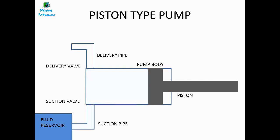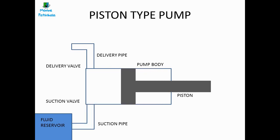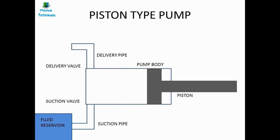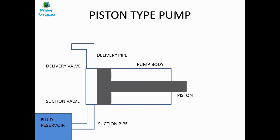When the piston moves forward, the suction valve closes and the piston pressurizes the fluid inside the pump, the delivery valve opens, and the fluid is discharged. This happens continuously and fluid is transferred from one place to another. Since the fluid is sucked into the pump due to the vacuum created and does not require any external means, these pumps are self-priming pumps.